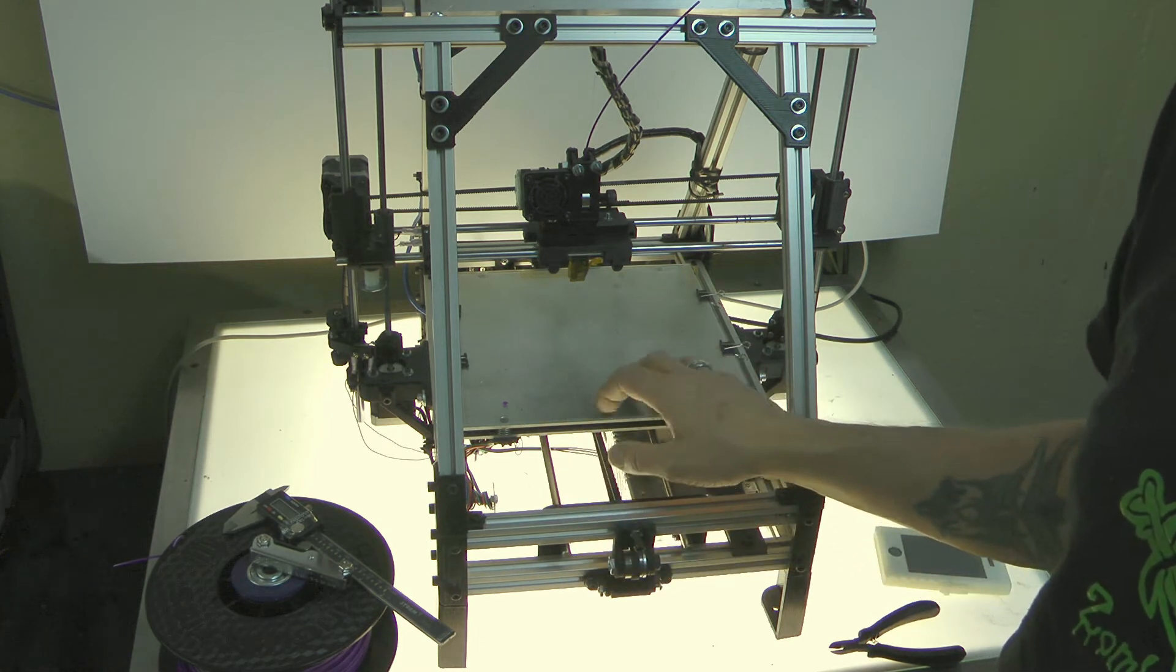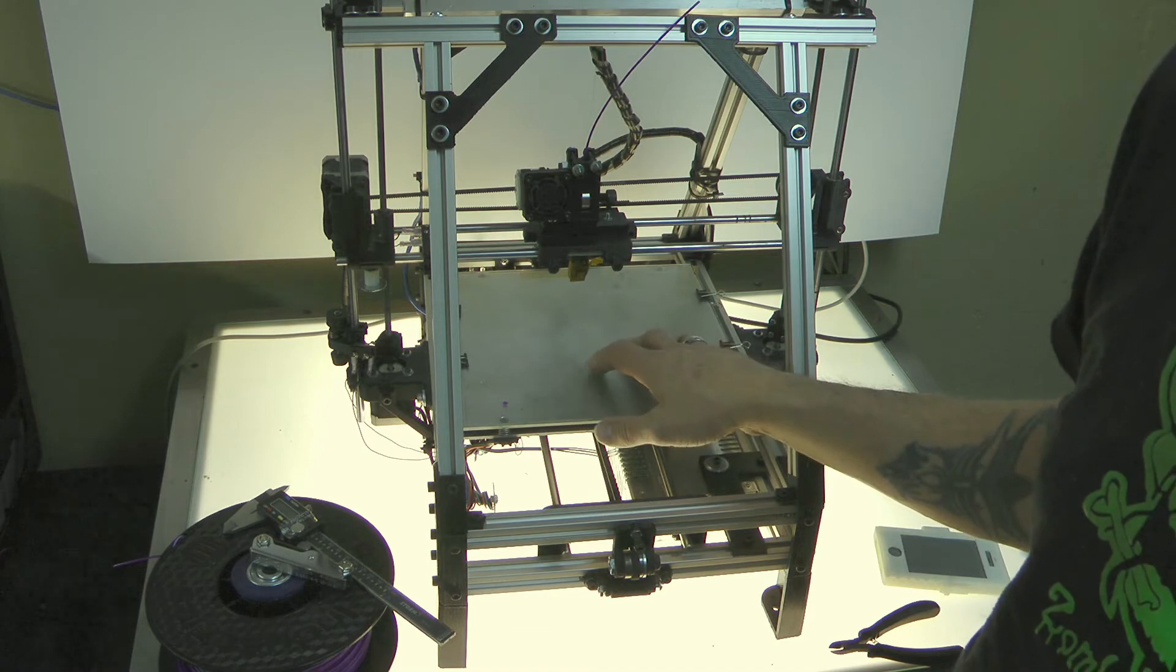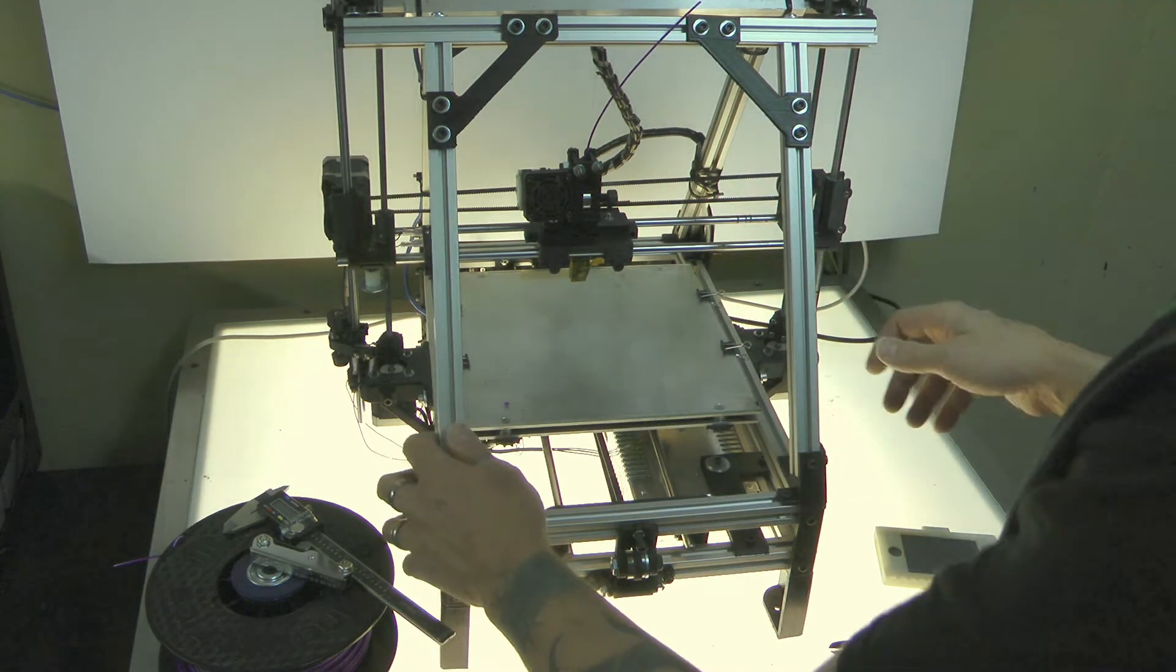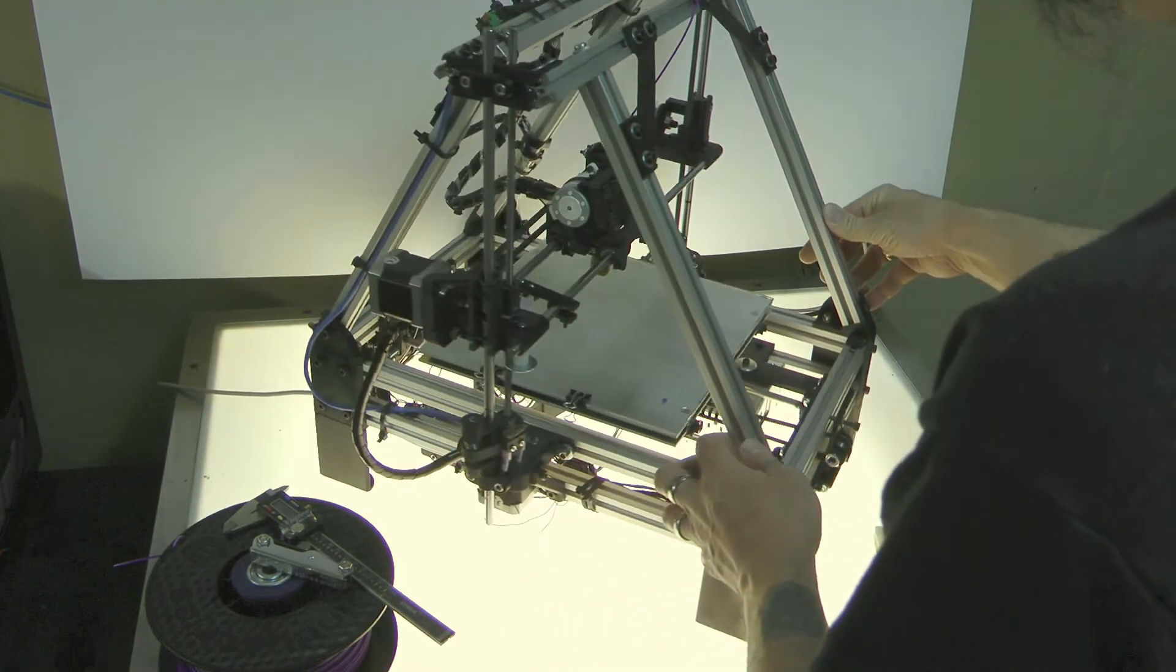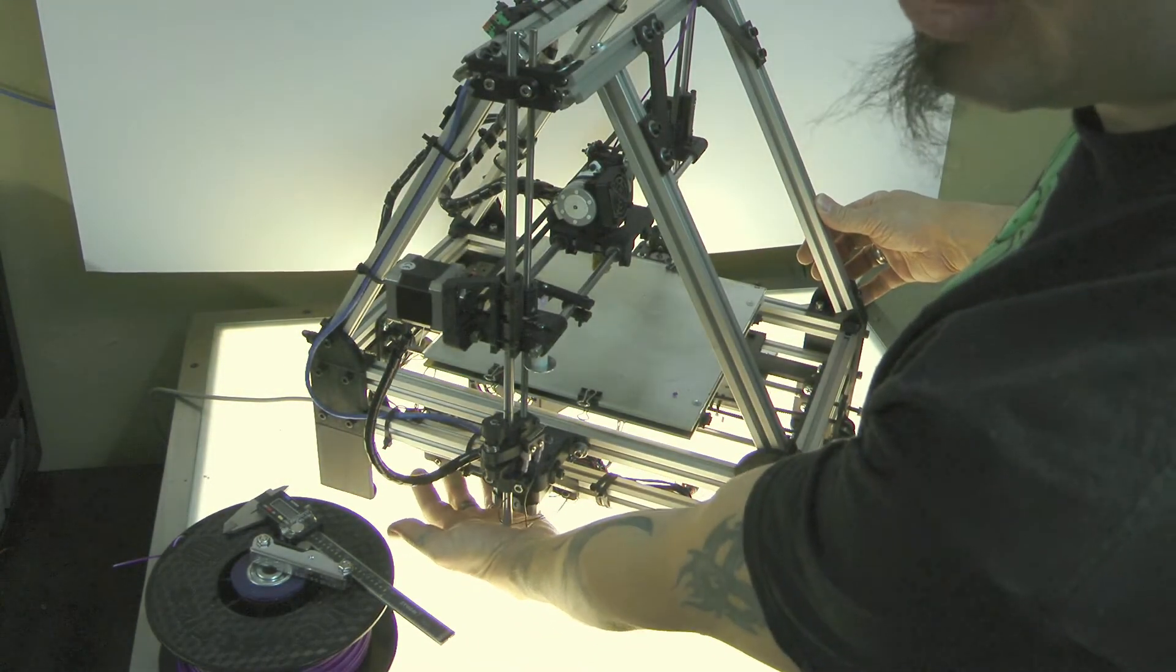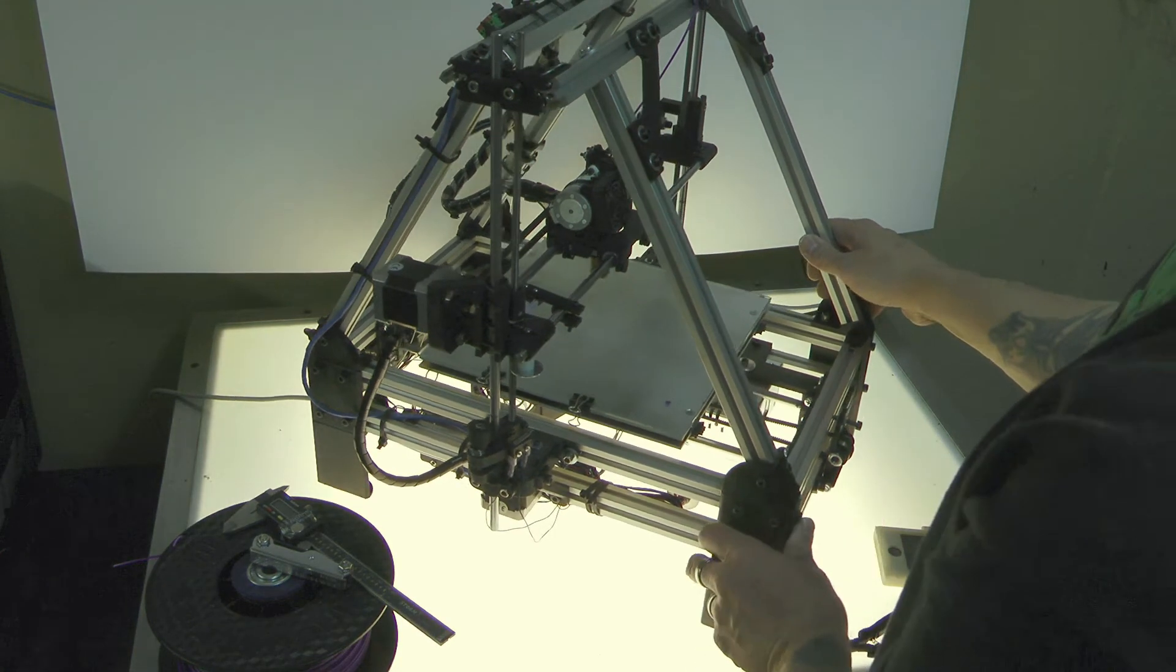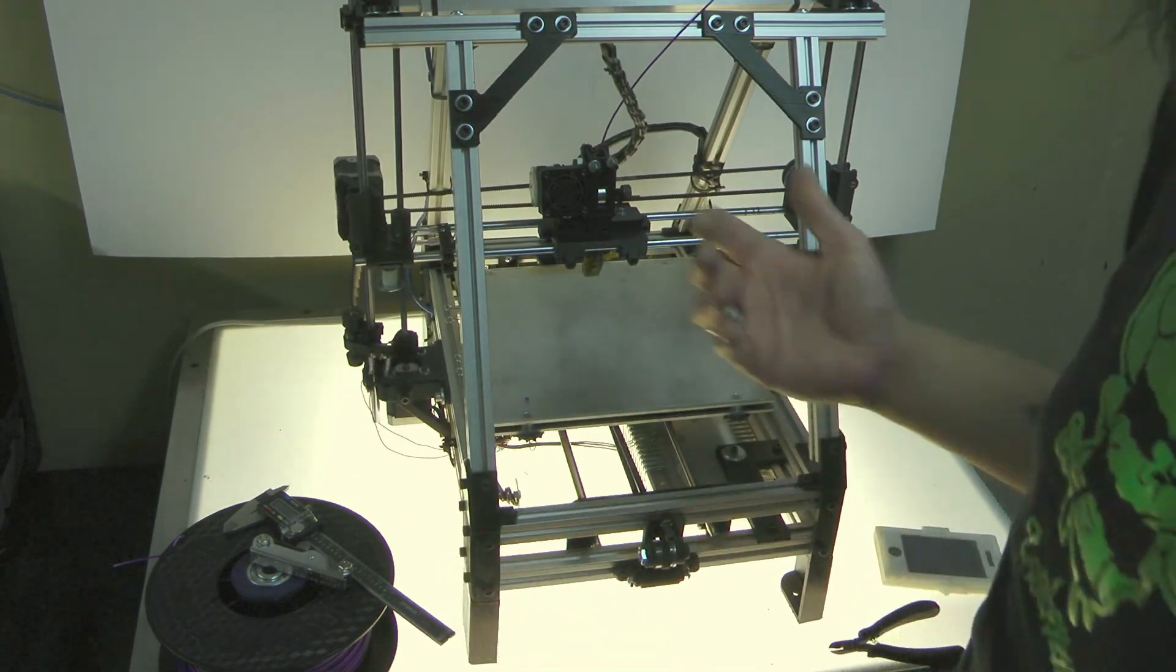But for right now, just know that you should plug the unit in into the back via mains current. And then locate the USB right here on the microcontroller and attach the USB-B to your computer. Those are the only two connections.